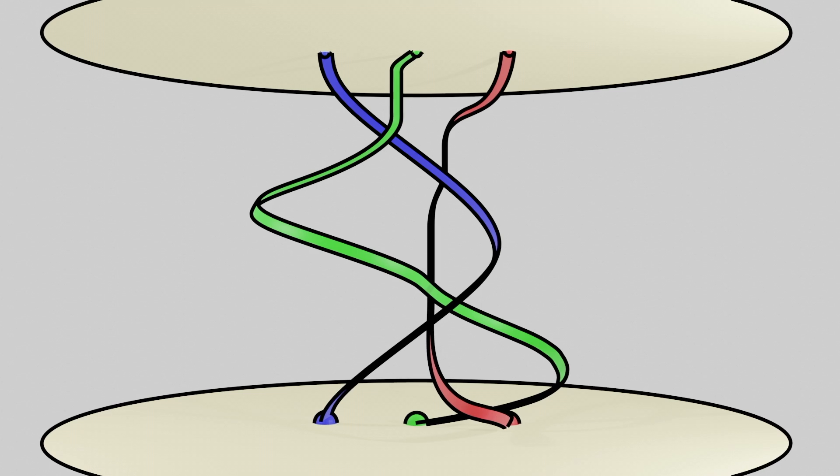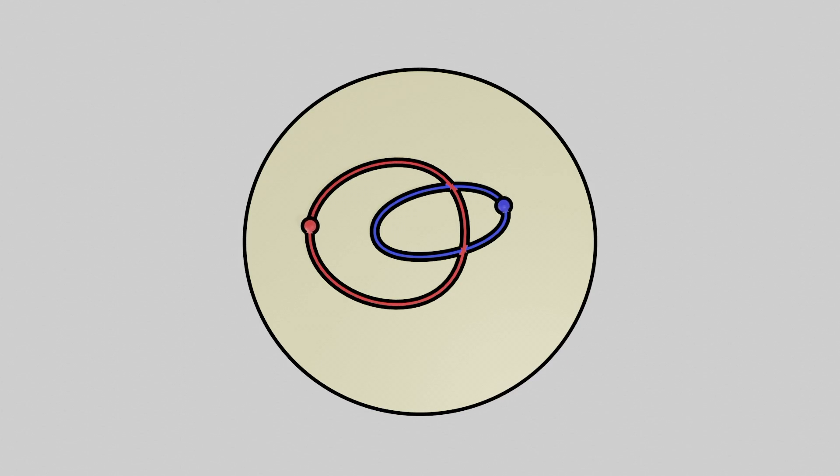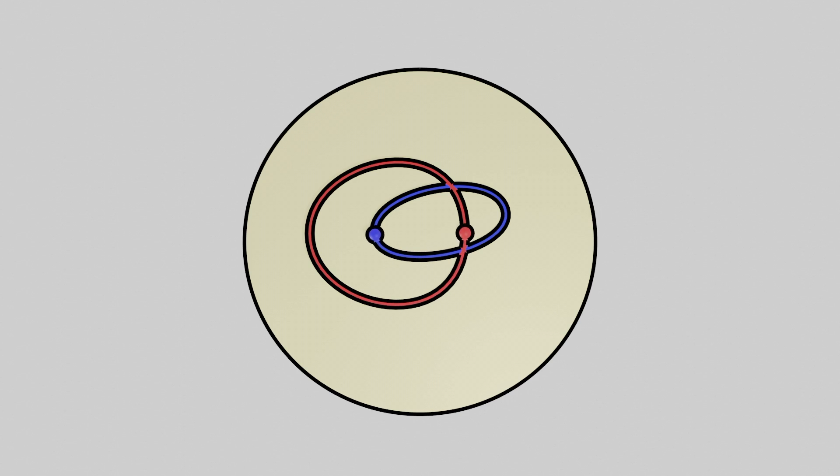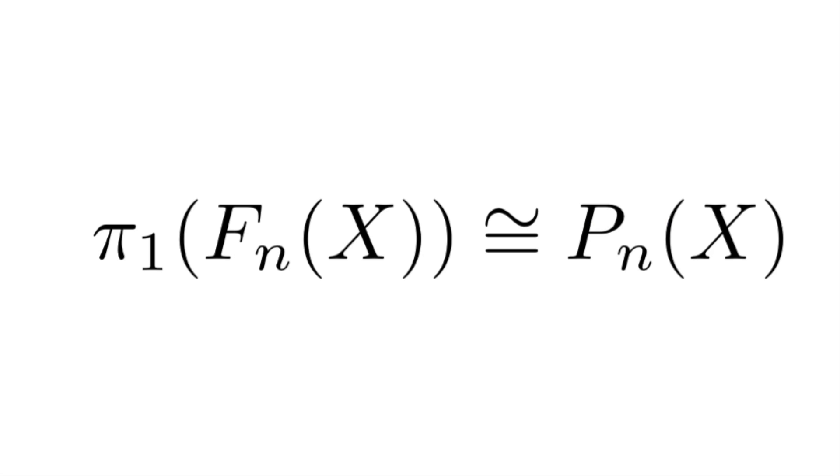This is either a cute theorem or a deep definition, depending on your point of view. A loop in a configuration space is the same thing as a pure braid. In fancier language, the fundamental group of a configuration space of n points is isomorphic to the group of pure braids on n strands on your space.